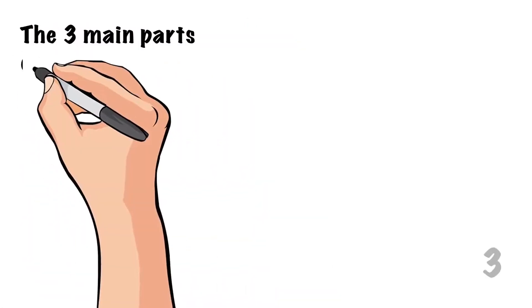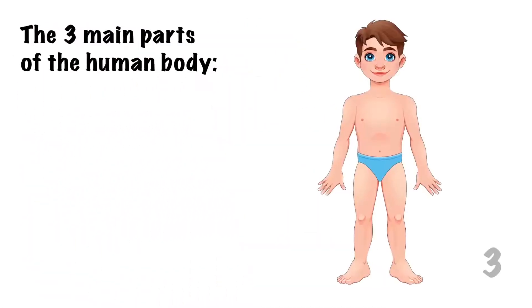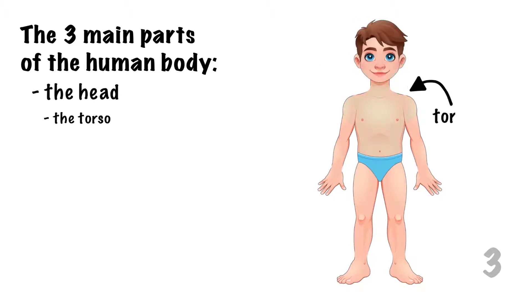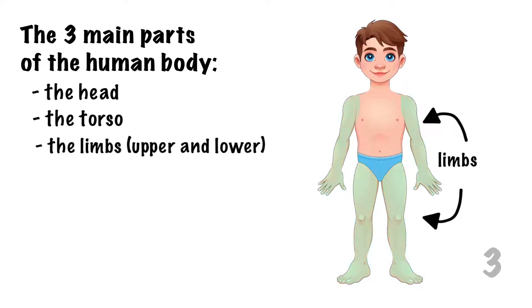Let's recall the three main parts of the human body: the head, the torso, and the upper and lower limbs.